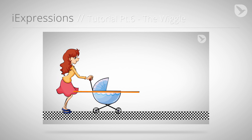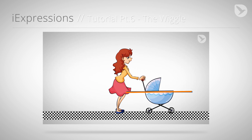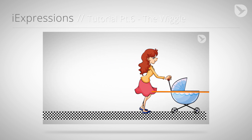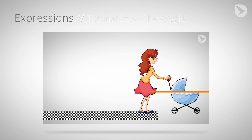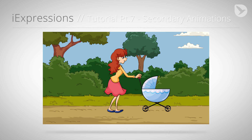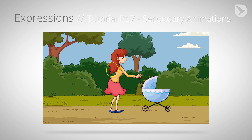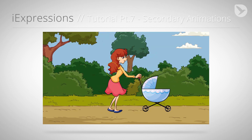In part 6 we add some wiggling to the baby buggy — of course it only wiggles when the baby buggy is moving. In the final part 7 we add some secondary animations to add more realism to our character. She is nicely breathing now and her hair is swinging when she moves.